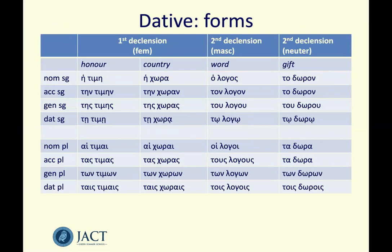Moving on to the dative. Here now is our table of noun forms with that fourth line added in — the dative — and these noun forms are now pretty much complete. Having a look at the dative forms, you'll see there's something weird going on in the spelling of the dative singular. In the dative singular in each of these examples you see there's a little squiggle underneath the vowel, whether it's an eta, an alpha, or an omega. That squiggle is not a typo — it's something called the iota subscript, an iota that has been squished underneath the vowel. The iota subscript is a really good clue that you're dealing with a dative.